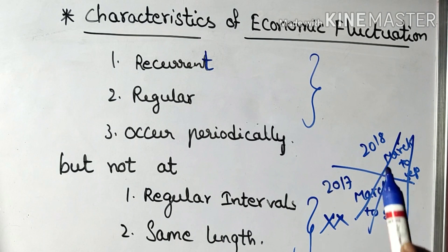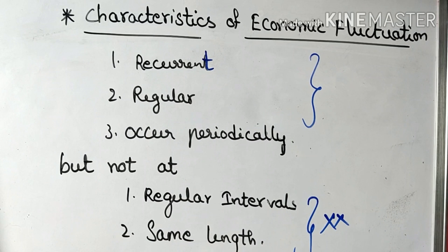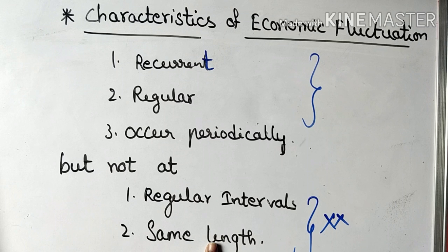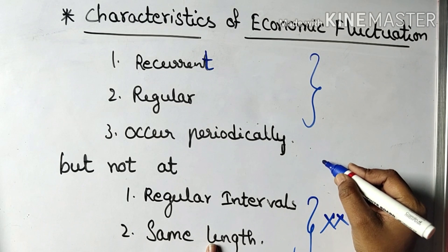We can also predict economic fluctuations. Next characteristic: same length. This means economic fluctuations have a consistent type of duration or length.